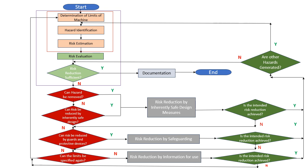There is one more scenario: if all three risk reduction measures — inherently safe design, safeguarding, and information for use — none of them work, then we go back to the very first step, which is determining the limits of the machine again. This is how the whole risk assessment life cycle works as per ISO 12100.